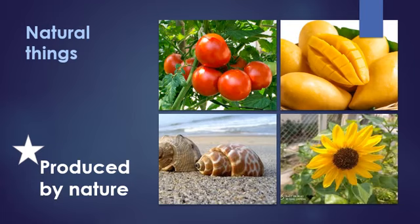Natural things are like the gifts of nature — mother nature gives us these gifts. Now when the tomato or mangoes are with the plant, they are living things. Once you separate them, once you cut them off from the plants, they become non-living things. So these non-living things are the gifts from nature, and they are called natural things.